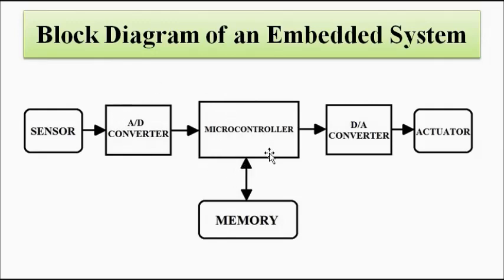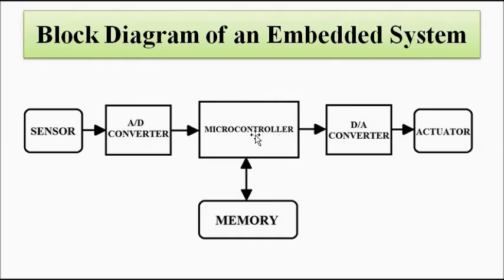Depending on the requirements of the microcontroller — which voltage level it responds to — the analog to digital converter converts it into that form and it is given to the microcontroller. Depending on the software, the program which is installed and saved in the memory, the microcontroller refers to those instructions and depending on that it functions to give certain outputs. The output of the microcontroller is also in digital form, so we use a digital to analog converter which converts the digital output of the microcontroller into analog form.